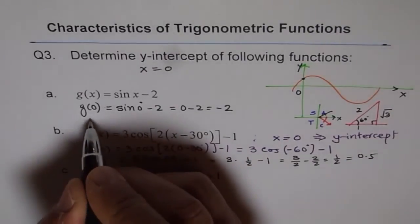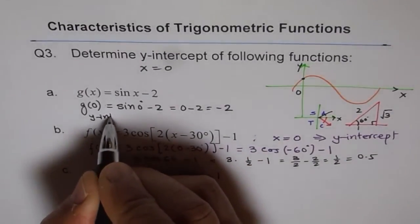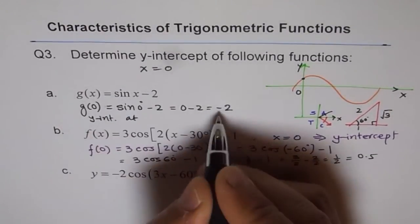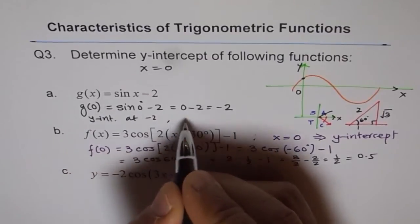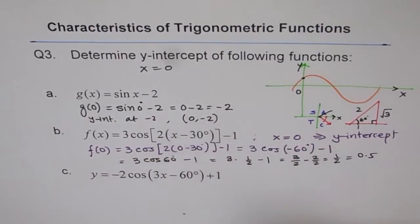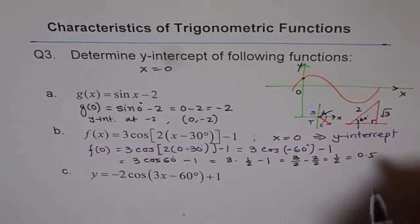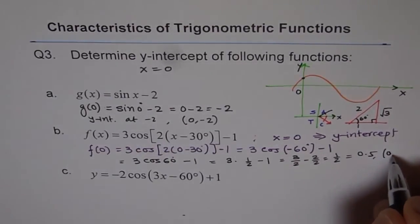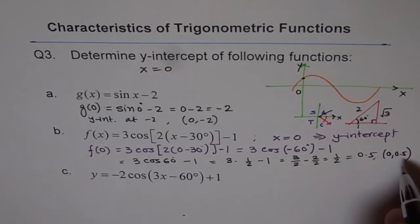So you can write here y-intercept at minus 2. Or you could give a coordinate point 0 for x and minus 2 for y. Similarly here, you could write your answer as 0 and 0.5. Do you understand? So that is how we can give the answer for such question.